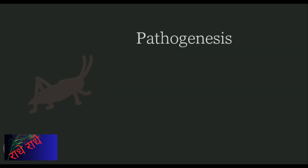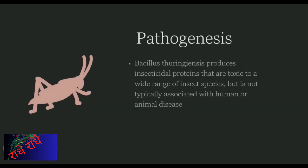B. thuringiensis, referred to as Bt, is a type of bacteria that possesses insecticidal properties. Ingestion of Bt by certain insects produces proteins that are toxic to them, yet non-toxic to humans and other animals. This quality has made it a top choice for controlling pests in crops and gardens.